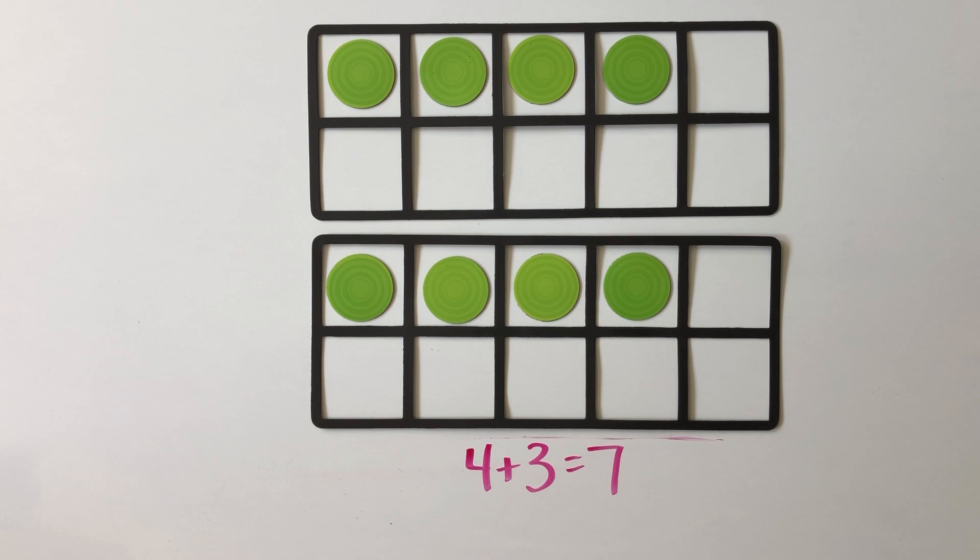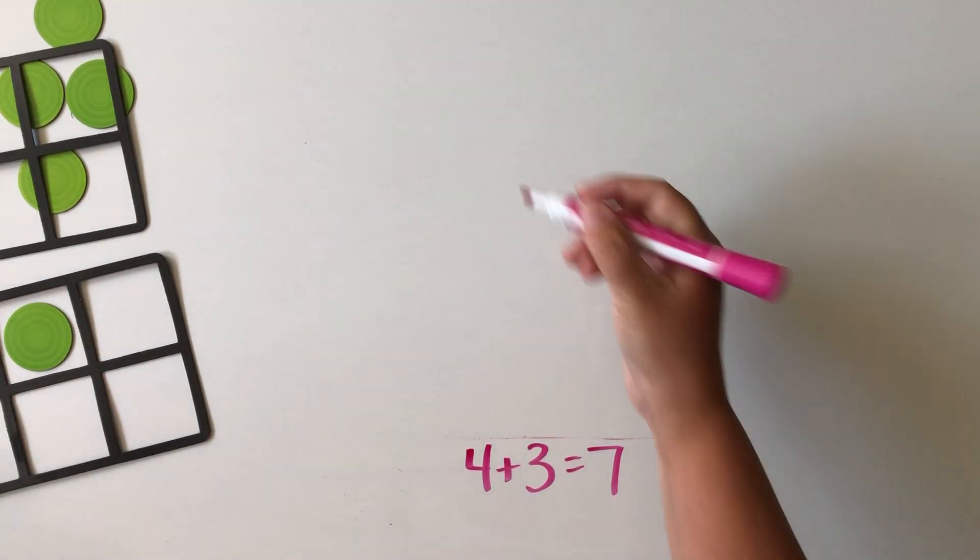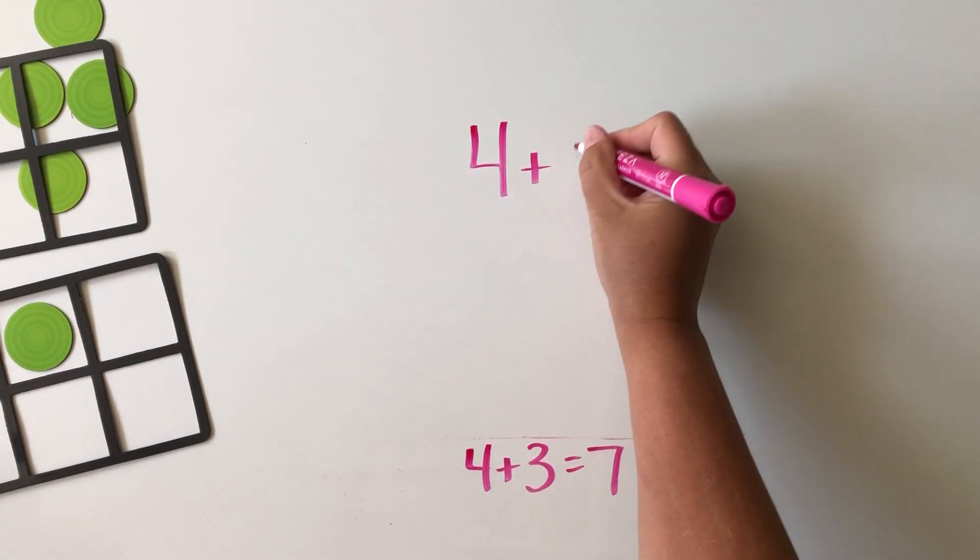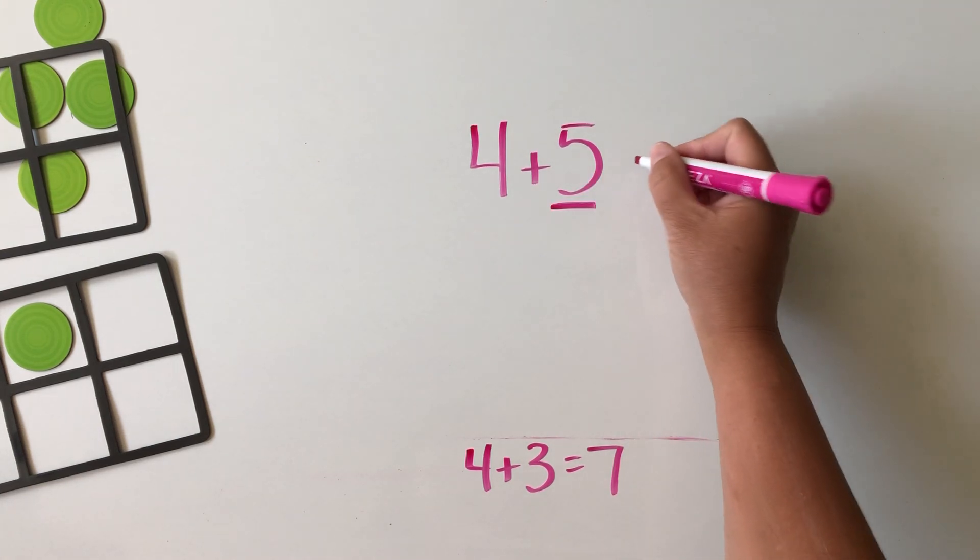Near doubles is really all about making connections and relationships between facts. We want our students to know that when they see something like 4 plus 5, we want them to recognize that 5 is really close to 4, so this is going to be really close to the doubles fact 4 plus 4. We can just add 4 plus 4 and then one more to make 9.